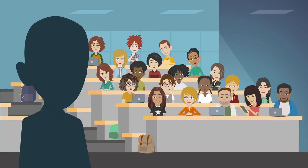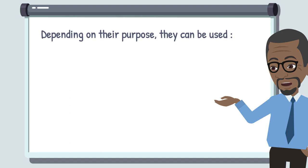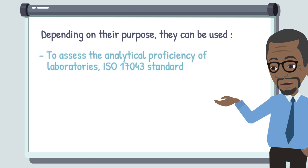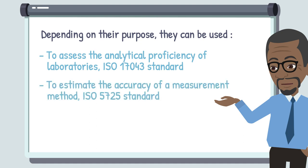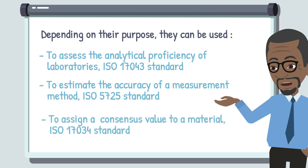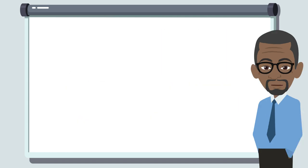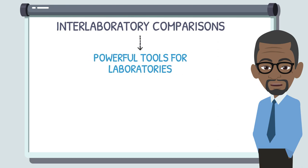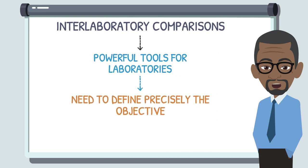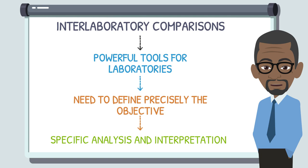In conclusion, proficiency testing schemes cannot be used to do everything. Depending on their purpose, they can be used to assess the analytical proficiency of laboratories (ISO 17043 standard), to estimate the accuracy of a measurement method (ISO 5725 standard), or to assign a consensus value to a material (ISO 17034 standard). As we can see, these are powerful tools available to laboratories, but they require a precise definition of their purposes in order to justify the analyses performed and their specific interpretation.